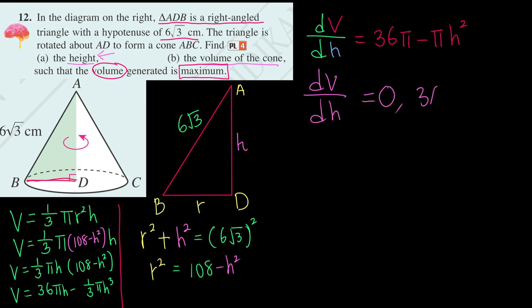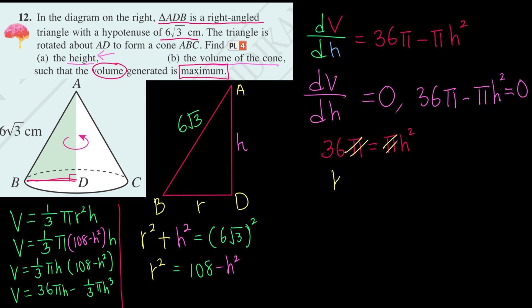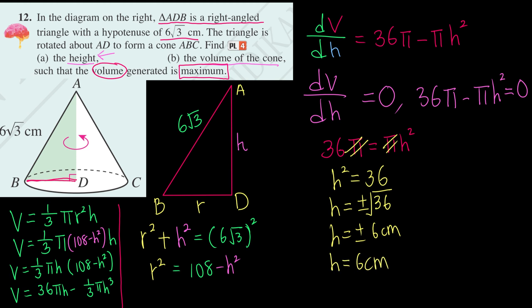So 36π − πh² = 0. We rearrange to get 36π = πh². Dividing both sides by π gives h² = 36. Therefore h = ±√36 = ±6 cm. Since height cannot be negative, h = 6 cm.